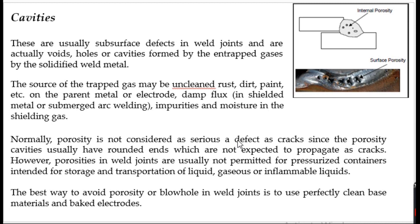The major difference between porosity and blowhole is size. Porosity diameters are very small — maybe a few to 150 microns. Blowholes are much bigger, up to a few millimeters, and are easily visible, usually at the surface. Porosity is not considered a serious defect in most cases because cracks cannot propagate through rounded pores. However, for pressurized containers storing flammable liquids or gases, porosity becomes much more critical. The best way to avoid porosity or blowholes is to use perfectly clean base materials and electrodes, since moisture in the electrode or base plate converts to vapor and causes porosity.